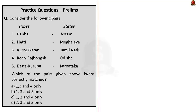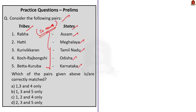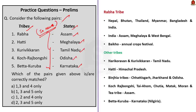The next question: consider pairs of tribes and their states — identify correctly matched pairs. The names of tribes were picked from recent news. The Rabha tribe is one of the most popular indigenous tribes of Nepal, Bhutan, Thailand, Myanmar, Bangladesh, and India. In India, the Rabha tribe is present in Assam, Meghalaya, and West Bengal. They celebrate the Baiko festival annually — Baiko being the principal deity of Rabhas associated with crops. So the first pair is correct.